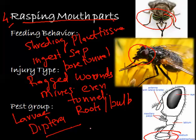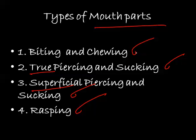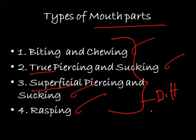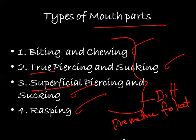Summarizing, we have four types of mouth parts: biting and chewing type, true piercing and sucking type, superficial piercing and sucking type, and rasping type. All these types create different types of injury to the plant, causing loss to different parts of the plant like flowers, fruits, roots, and stems. In the next video on classification of insects, we will see more about the Insecta or Hexapoda group, the various subclasses, divisions, and orders coming under the Insecta class.